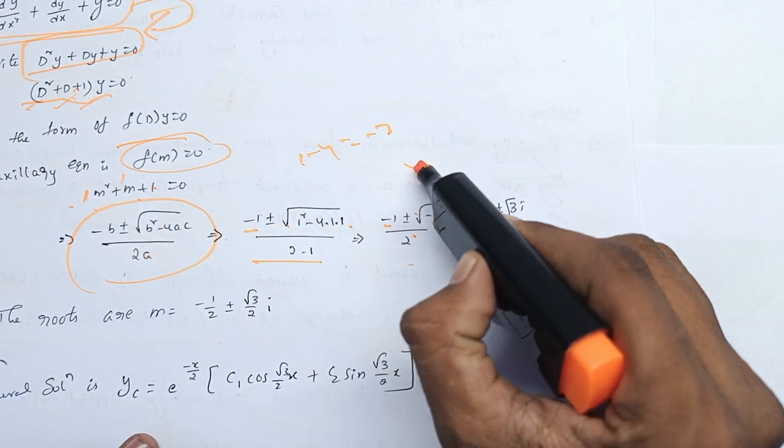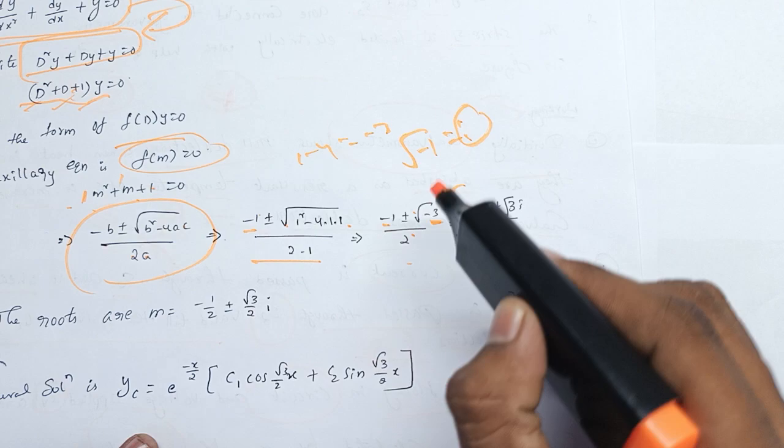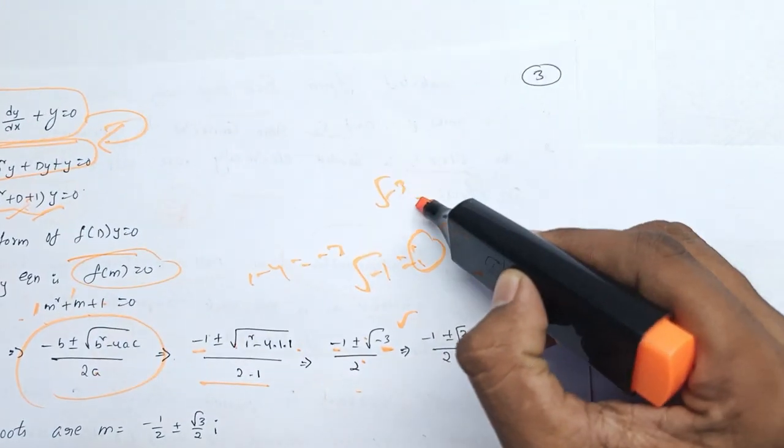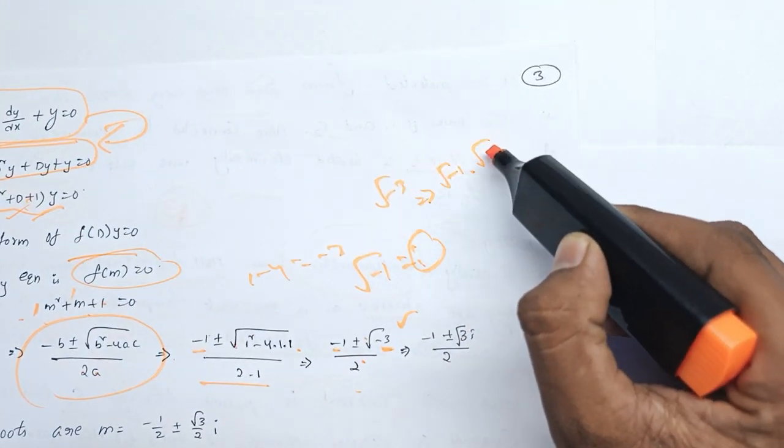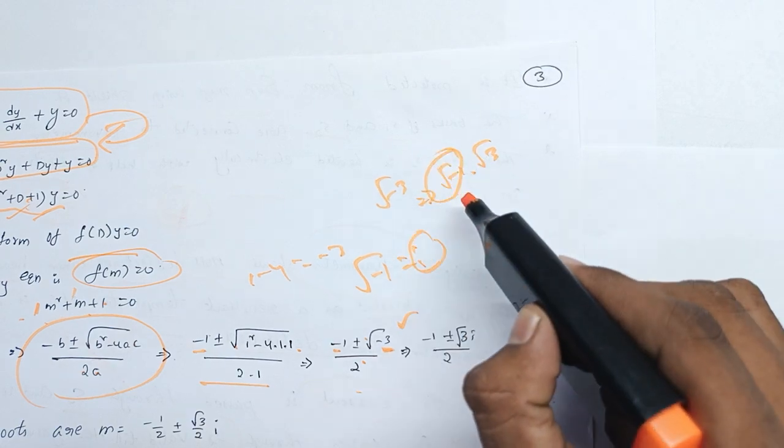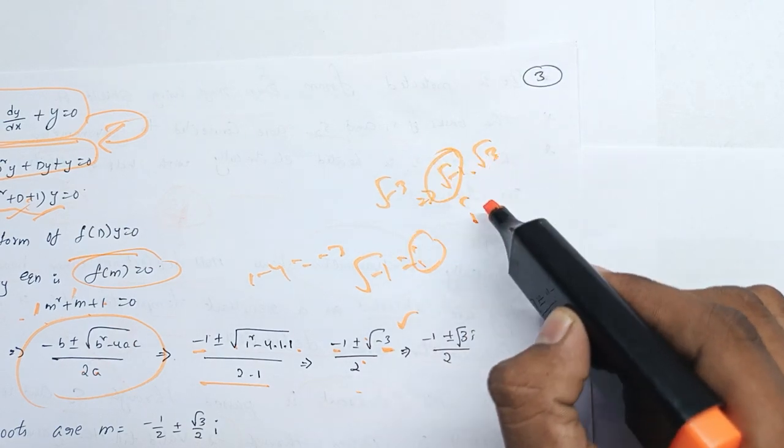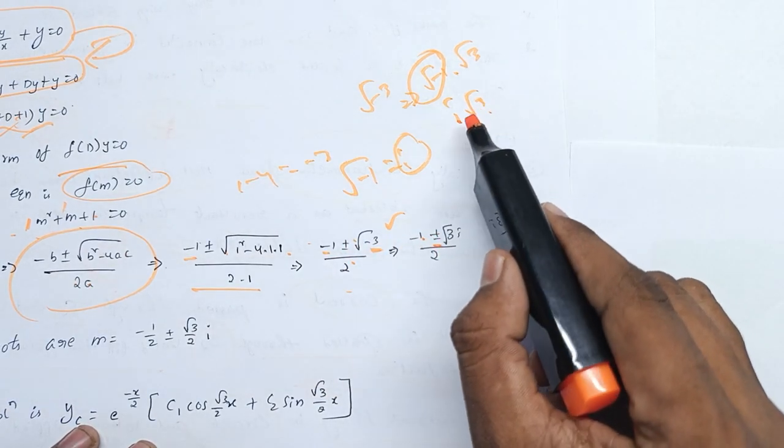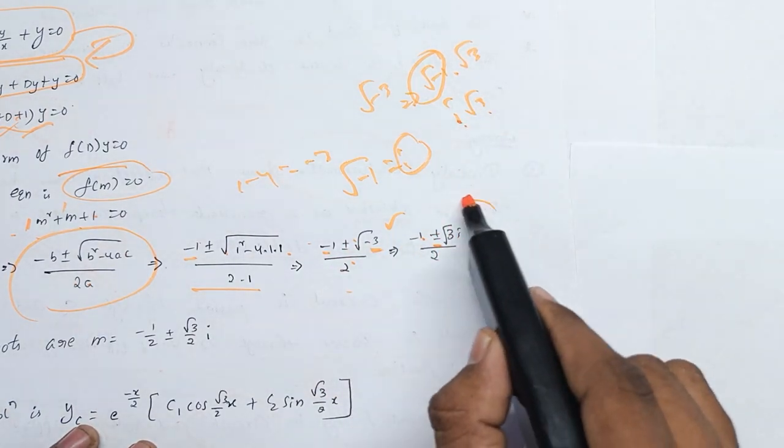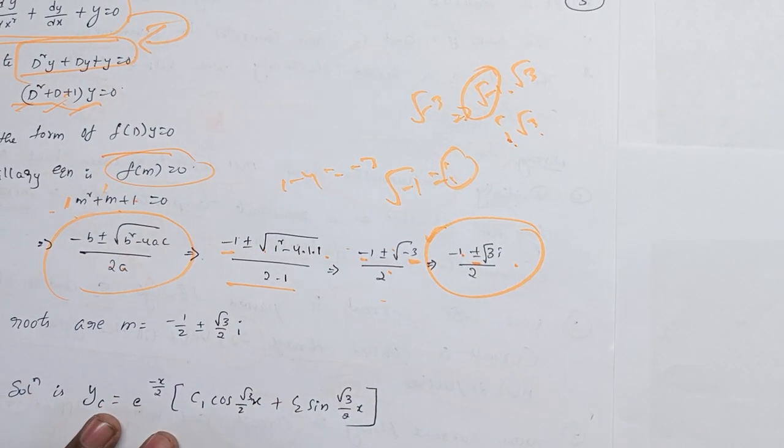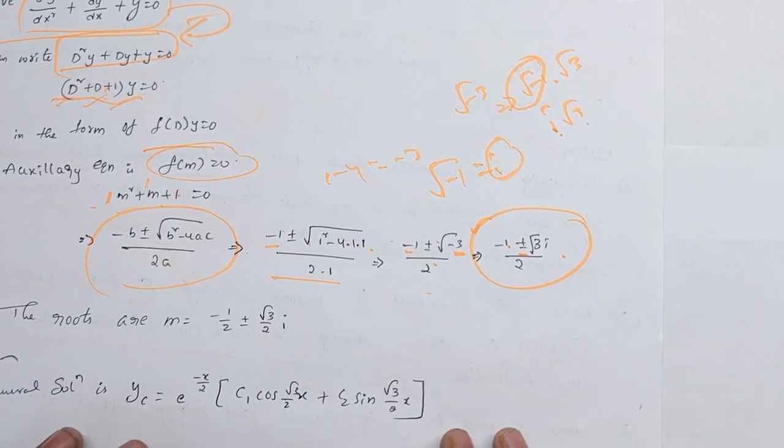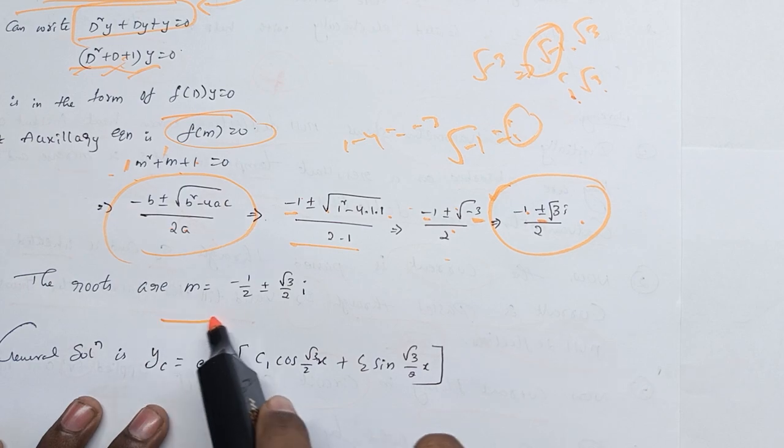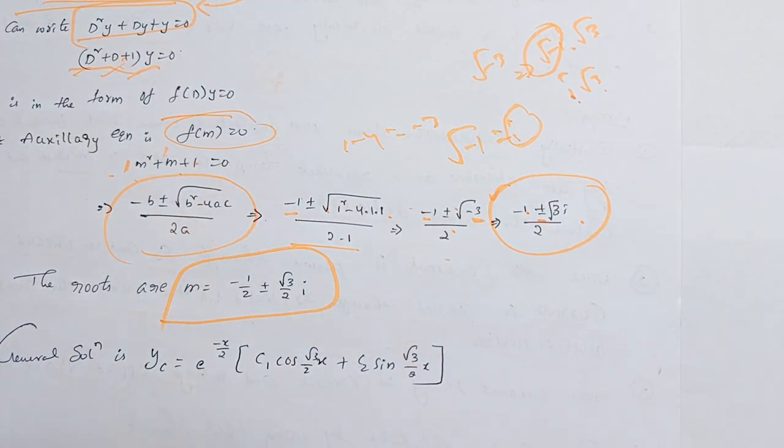So you have √(-1) which equals i, times √3. So √(-1)·√3 = i√3. Therefore m = (-1 ± i√3) / 2. So the roots are m = -1/2 ± (√3/2)i.